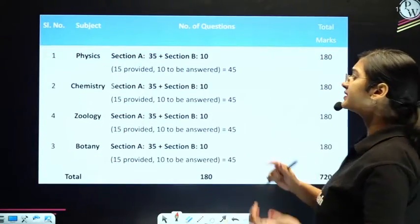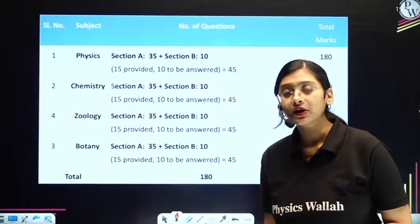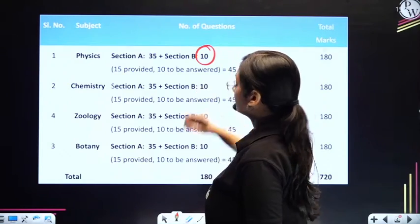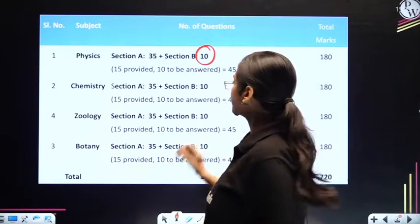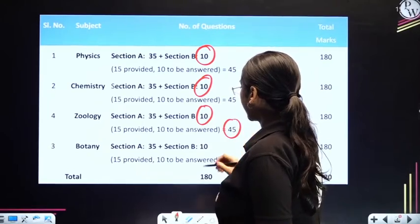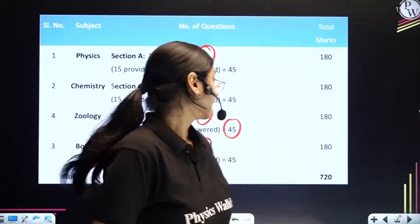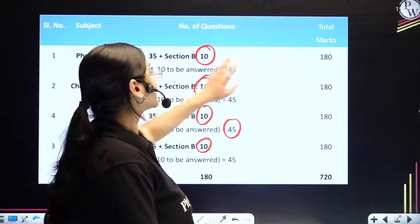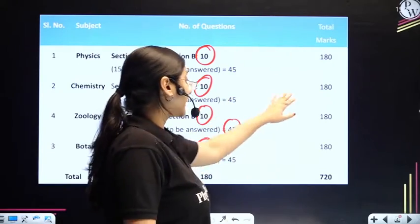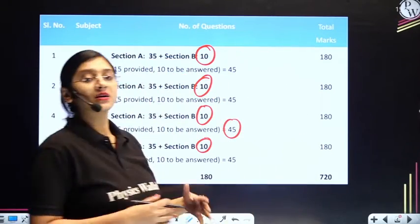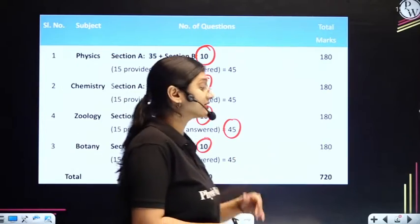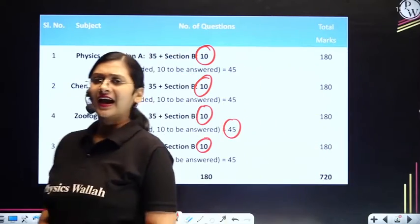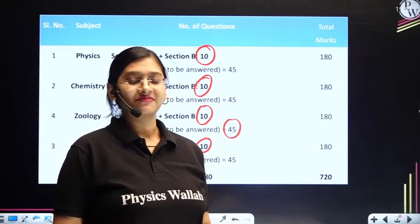In section B, which has 15 questions with choices, you only have to answer 10 questions in physics, chemistry, botany, and zoology. This is how you will be able to score 180 marks in physics, 180 in chemistry, and 180 plus 180 — that is 360 — in biology. So half the NEET questions and half the score come from biology. If you answer incorrectly, you get minus 1 as a negative mark.